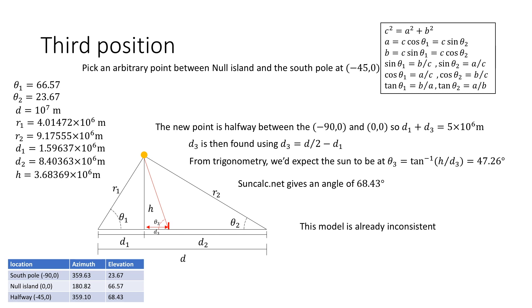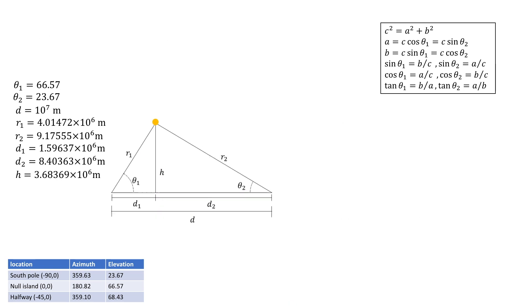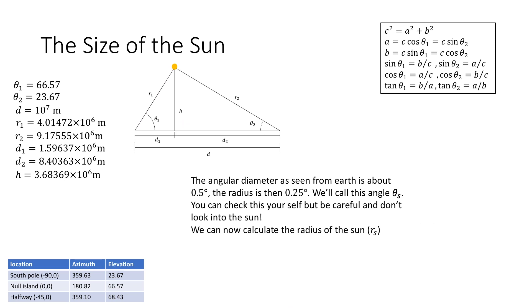Now this tells us already that this model is not consistent. Now there are two ways this could be. Either the mathematics is wrong or the actual assumption that the earth is a flat disk with the sun hovering above it is incorrect. Now I know the maths is not wrong. So this model is inconsistent. However let's ignore that inconsistency and move on.